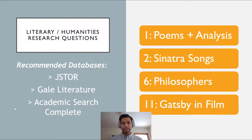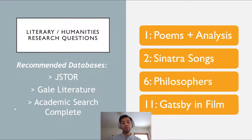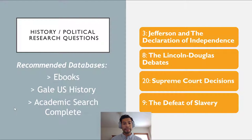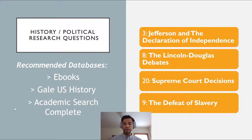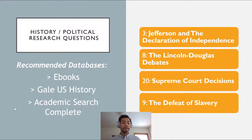We have many databases and sometimes, depending on your topic, librarians will recommend specific databases. For example, it wouldn't make sense to use JSTOR if you had a science-based topic because JSTOR is not really a science database. The other category of questions from the list seems to deal with historical or political inquiries — for example, there's one on the defeat of slavery, the Lincoln-Douglas debates, and also variations of Supreme Court decisions.